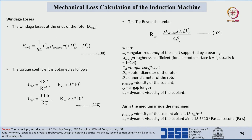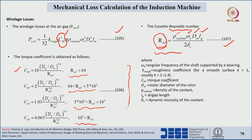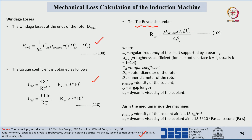Windage losses at the ends of the rotor are obtained with another formula based on assumptions and empirical relations, with partial proof in the reference. These losses depend upon the torque coefficient, which in turn depends upon the tip Reynolds number — a different variable from the Coet Reynolds number discussed earlier. The tip Reynolds number depends upon coolant density times angular frequency of the shaft times outer diameter of the rotor squared, divided by 4 times dynamic viscosity of the coolant.